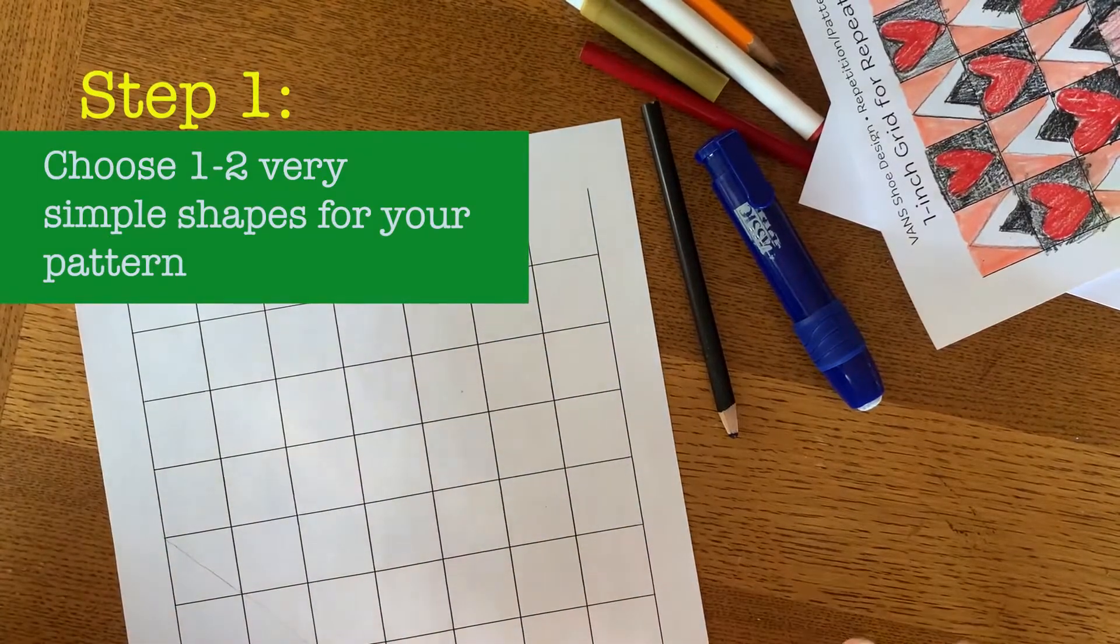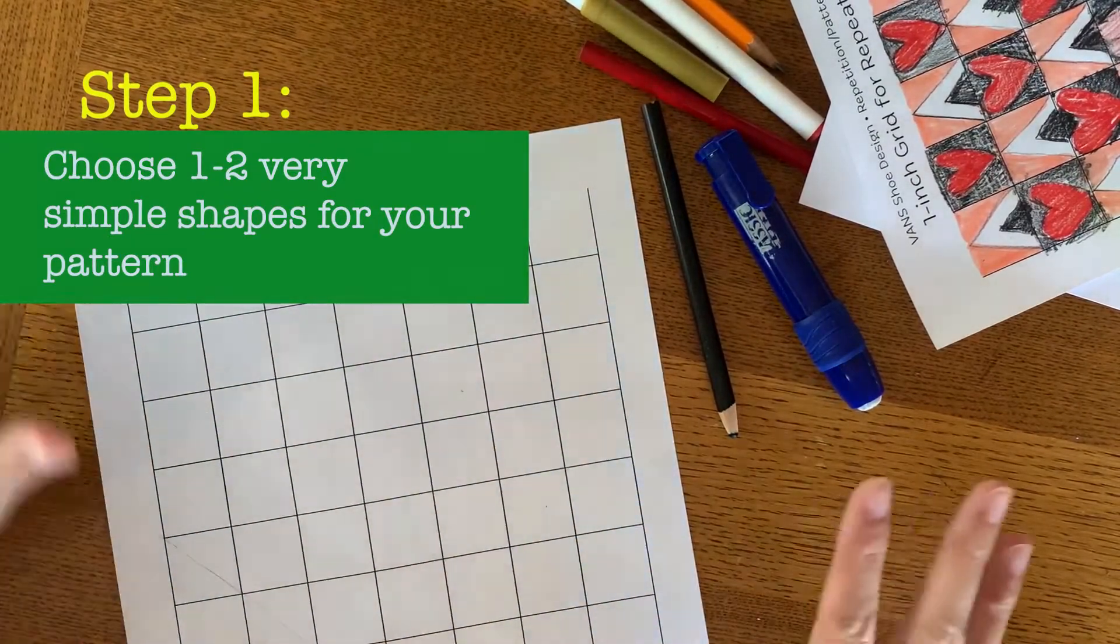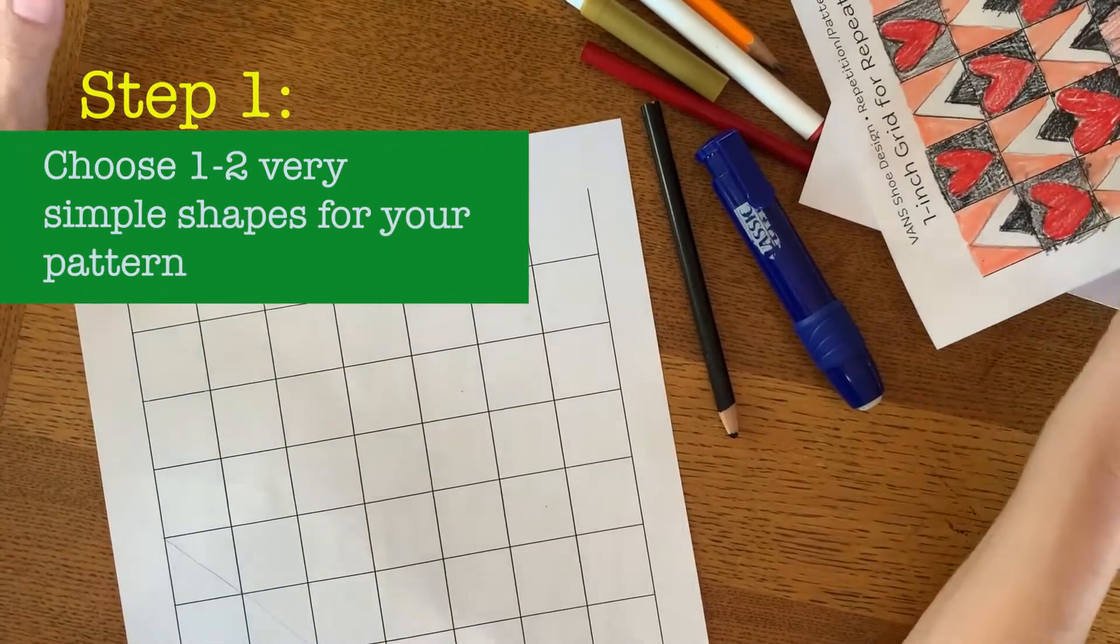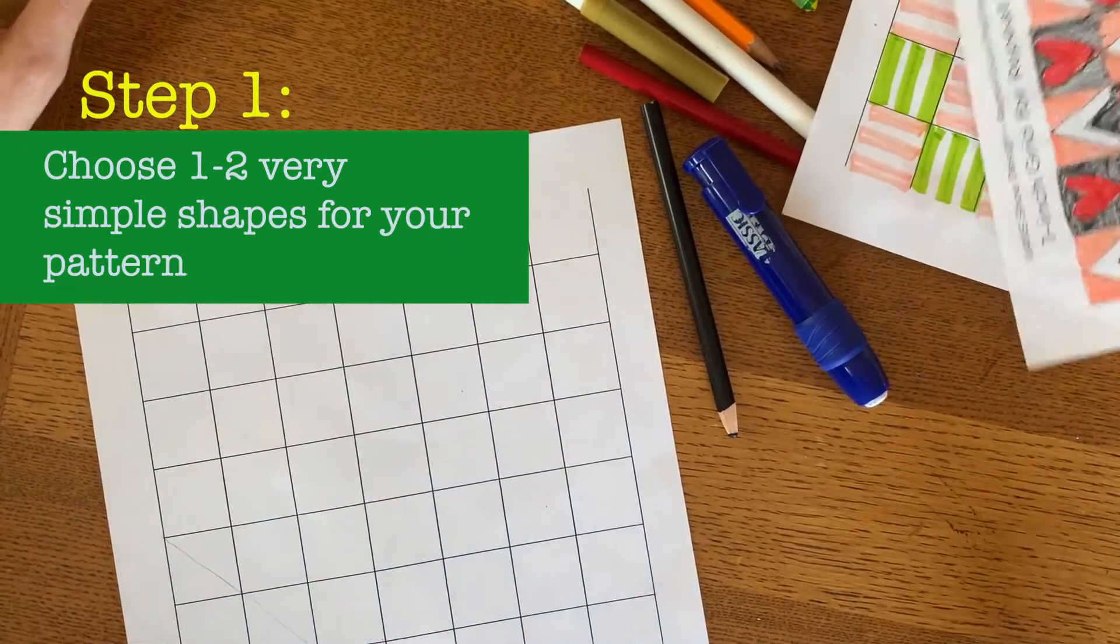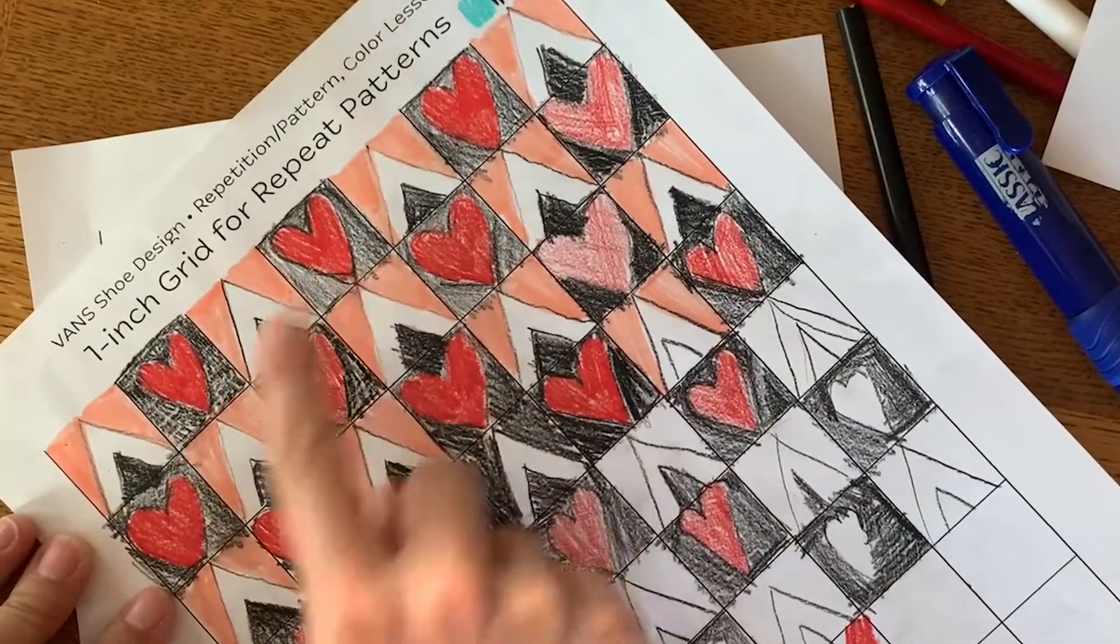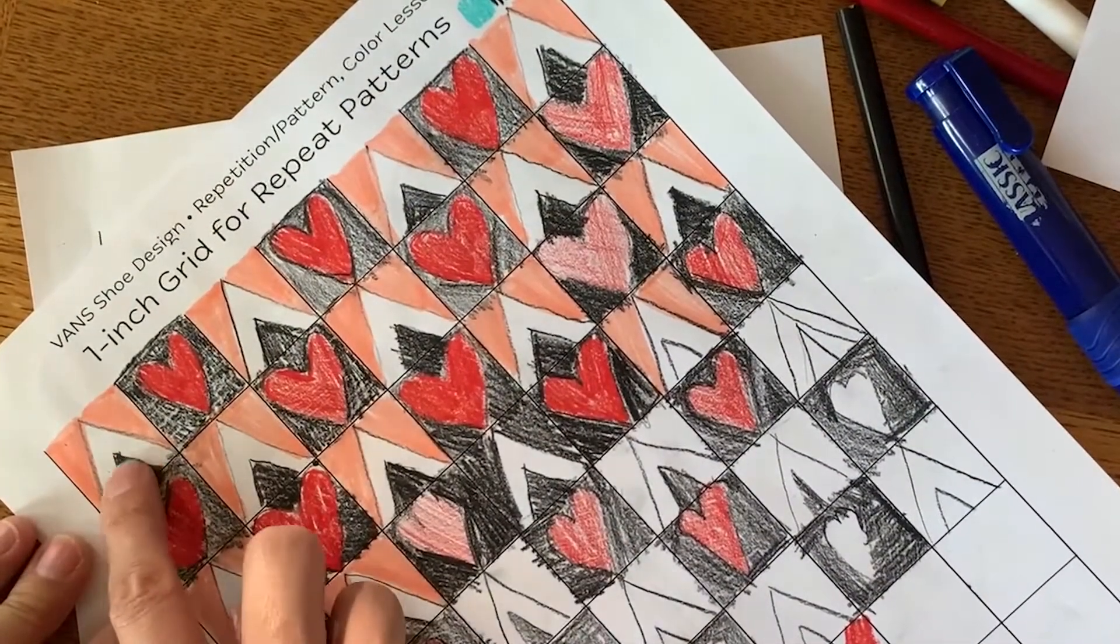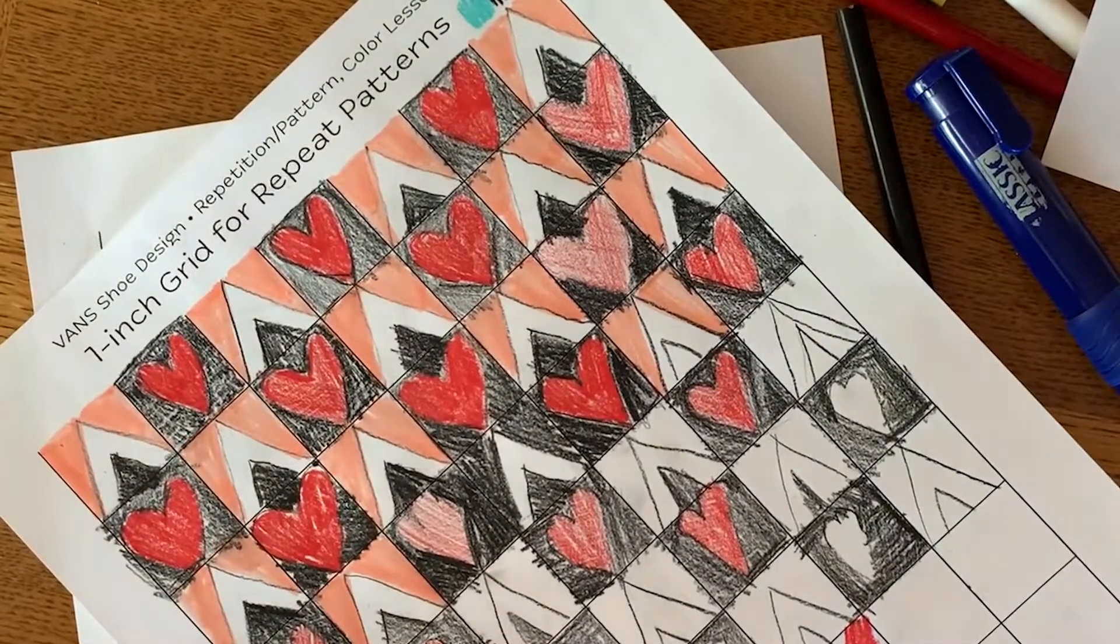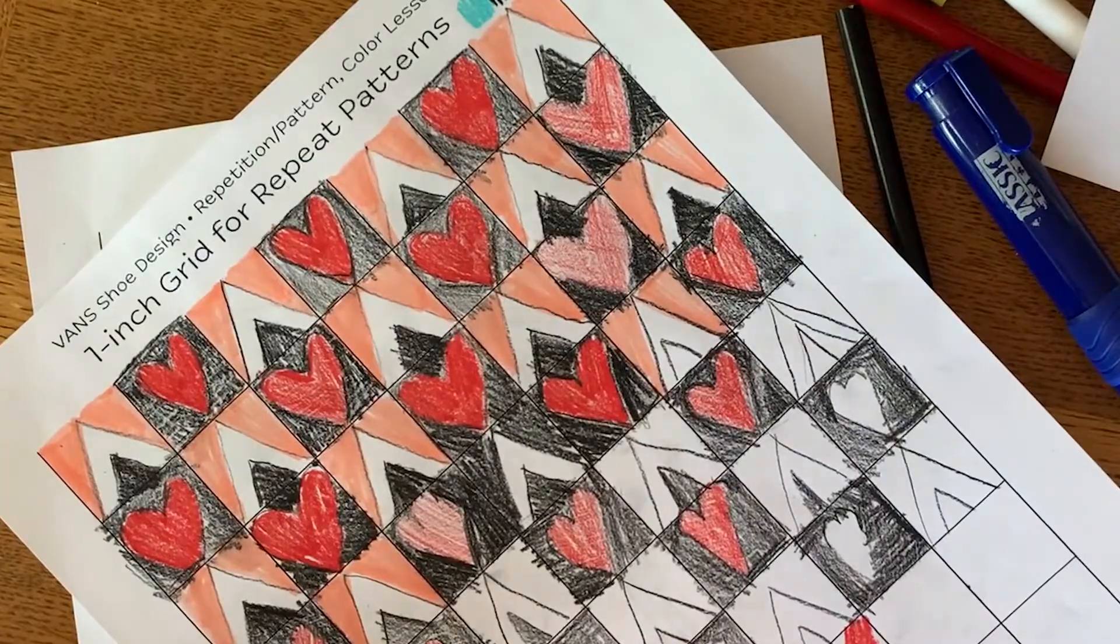I want to make sure that you all understand you are just picking one to two very simple shapes. As you can see in this one, my daughter and I chose triangle heart, triangle heart, and then we put another triangle within the triangle to make it a little bit more interesting looking.